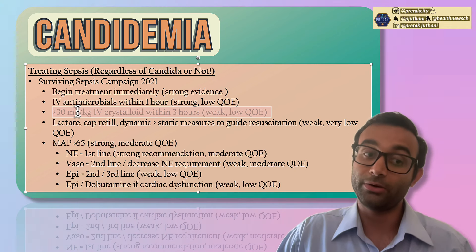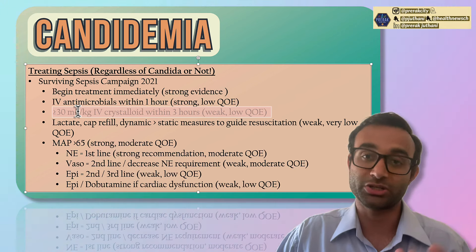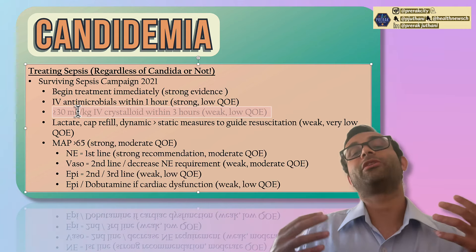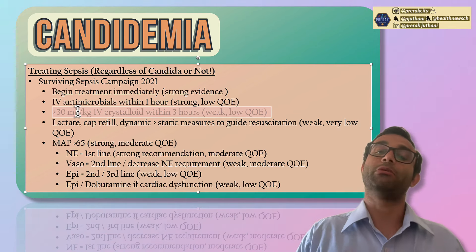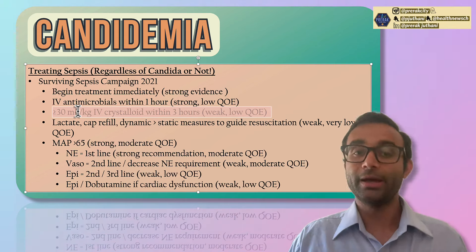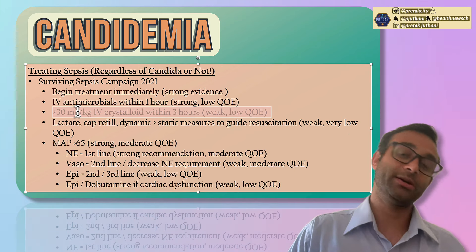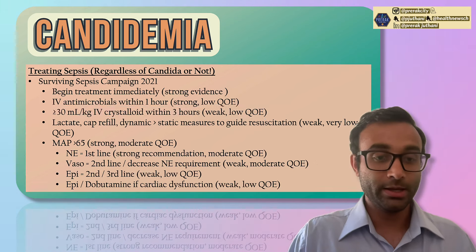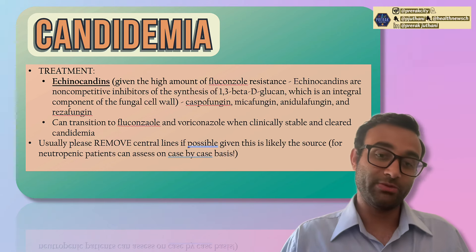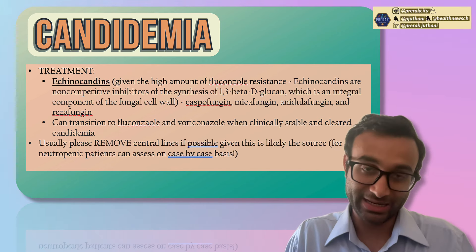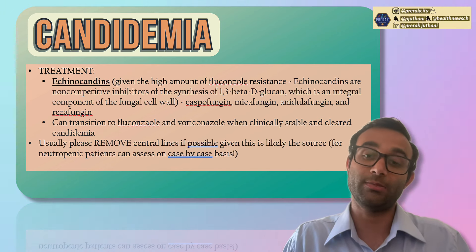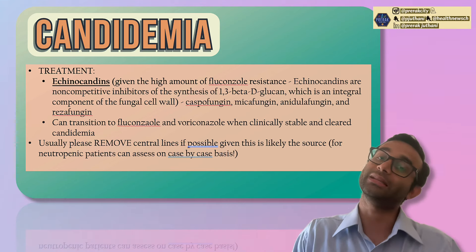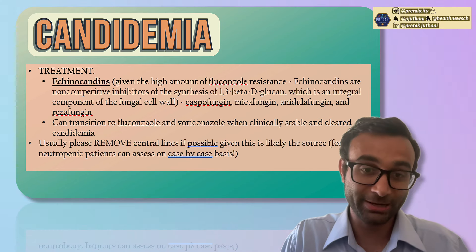Ultimately, you want the mean arterial pressure above 65. Give fluids first, and if blood pressure still doesn't improve, give vasopressors. This is an aside, but it's a good way to understand how to treat someone with septic shock — because someone with candidemia will often present with signs of concern for sepsis. The treatment for candidemia specifically is with echinocandins, which inhibit the synthesis of 1,3-beta-D-glucan found in the fungal cell wall.